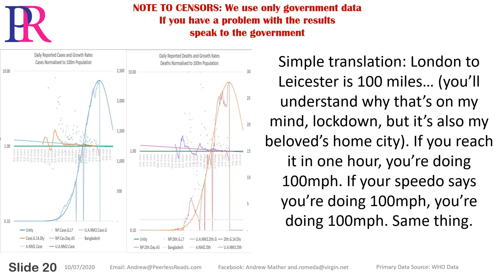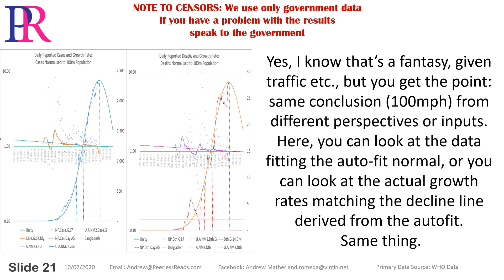Simple translation: London to Leicester is 100 miles. If you reach it in one hour, you're doing 100 miles an hour. If your speedo says you're doing 100 miles an hour, you're doing 100 miles an hour. Same thing — same conclusion, from different perspectives or inputs. Here you can look at the data fitting the autofit normal, or you can look at the actual growth rates matching the decline line derived from the autofit. It's the same thing.